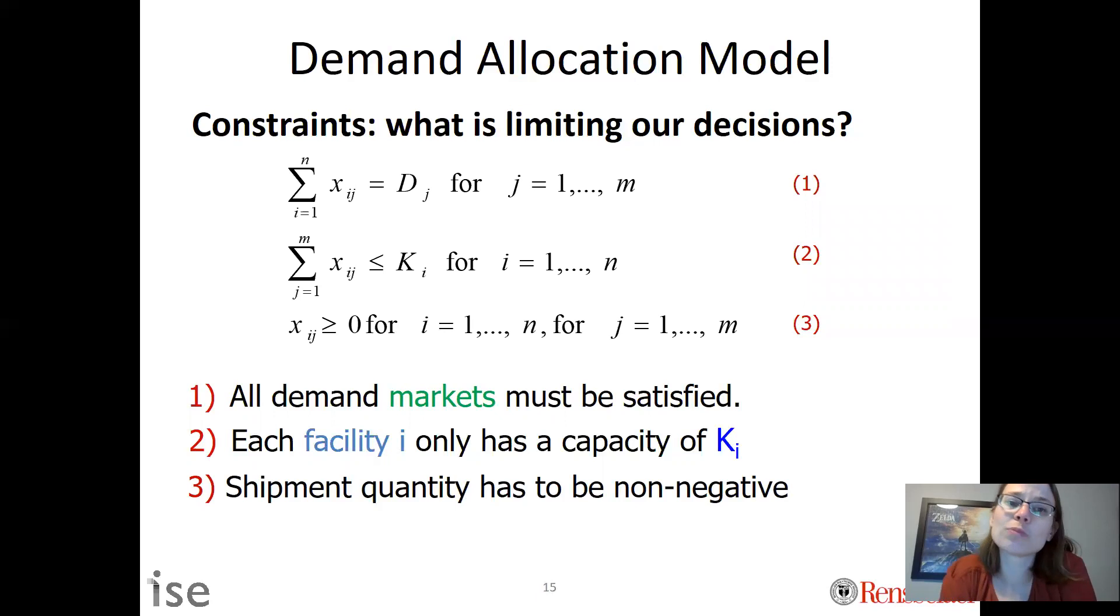How would we do this in math? The first equation says if I sum up over all my different facilities where stuff can come from, Xij has to equal the demand given, and that is true for all j. There would be M separate constraints all represented in that first constraint set. The second constraint says we must have enough capacity, so for all i, we can only ship enough demand if we have the capacity to do so. The last one says all the Xij have to be greater than or equal to zero.